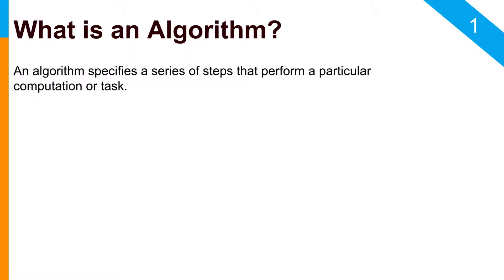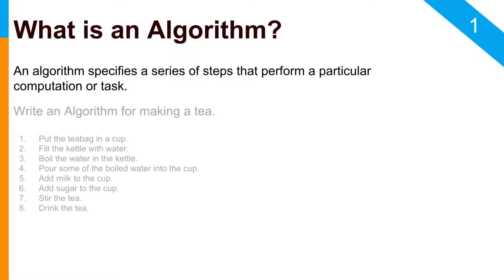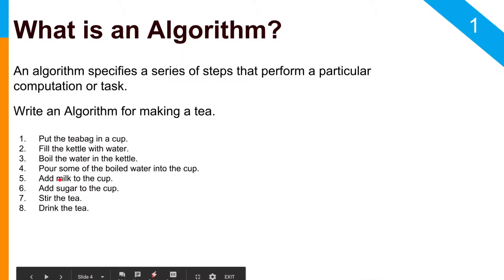To give you an example of how to write an algorithm to make tea, you can simply write this series of steps: put the tea bag in a cup, fill the kettle with water, then boil the water, then pour some of the boiled water into a cup.